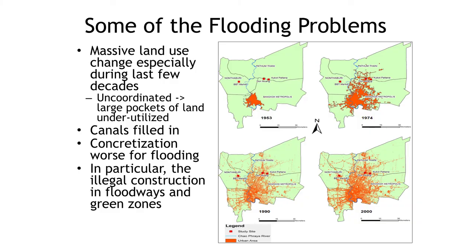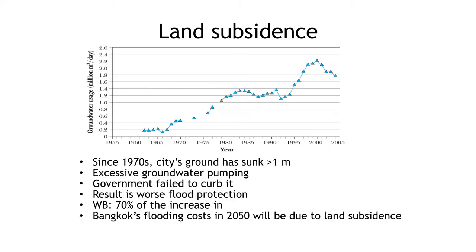One big issue was massive land use change, which occurred especially during the last few decades as the country transformed from an agricultural base to an export-led economy. Canals are filled in by developers to build new buildings and roads, meaning there is less capacity for floodwater runoff. Concretization decreases water infiltration, increases runoff, and hastens it into channels. Since the 1970s, the city's ground has sunk more than one meter, primarily due to excessive groundwater pumping by industries.